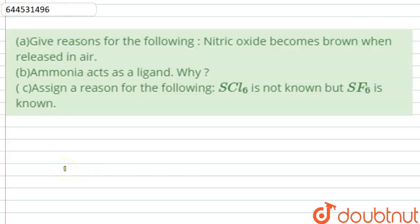Hello students, let us have a look at the question. The question has three parts and we need to give reasons for the following: nitric oxide becomes brown when released in air; ammonia acts as a ligand, why?; and SCl6 is not known but SF6 is known.